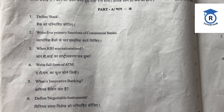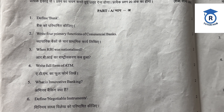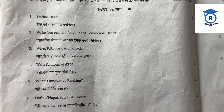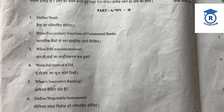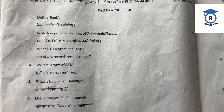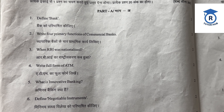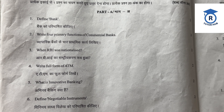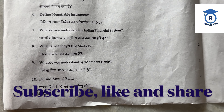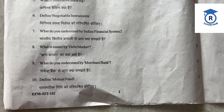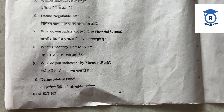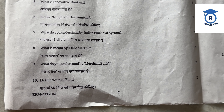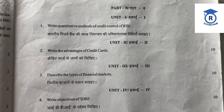Part A questions: 1) Define bank — bank ko paribhashit kijiye. 2) Write four primary functions of commercial bank — vyaparik bankon ke 4 prathmik karya likhiye. 3) When was RBI nationalized? 4) Write full form of ATM. 5) What is innovative banking? 6) Define negotiable instruments. 7) What do you understand by Indian financial system? 8) What is meant by debt market? 9) What do you understand by merchant bank? 10) Define mutual fund.